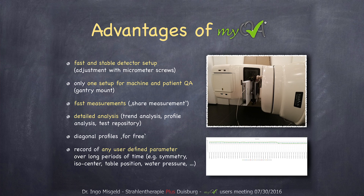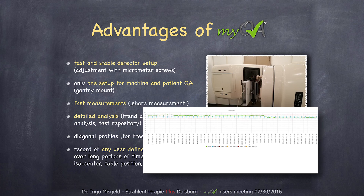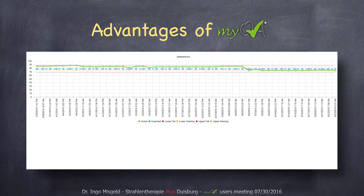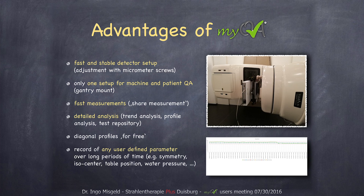You also get the diagonal profiles for free — every profile you record includes not only the parameters you set up in your test, but also the diagonal profiles automatically. And you can record any user-defined parameter over a long time — for example, the symmetry, the ISO center position, the table position, water pressure, whatever you want to keep track of. This trend analysis always gives you a good way to see how a parameter behaves over time.